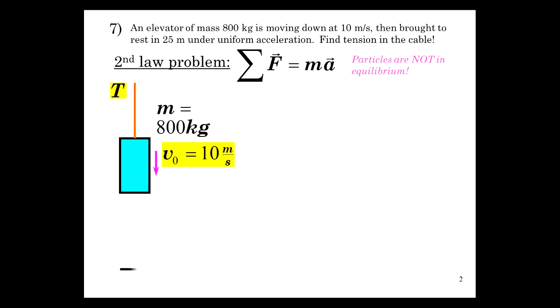Let's do another elevator problem. This time it's accelerating, it is not in equilibrium, so sum of f is ma. We're going to find the tension in the cable bringing the 800 kilogram mass elevator moving down at 10 meters per second and bringing it to rest in 25 meters. Free body: we have the weight and the tension. The tension has to be greater than the weight because it's got to accelerate upward so that it comes to rest.